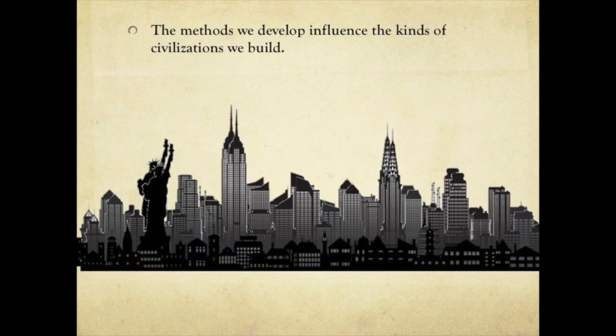Take everything we just went over — economic organization is best summarized as: the methods we develop influence the kinds of civilizations we build. Looking at the picture on screen, it's the skyline of New York City. Why did New York get so big? What allowed it to get that big? I went for the very first time last year at 53 years old, and I was awestruck by the city.